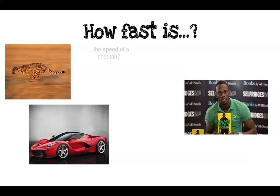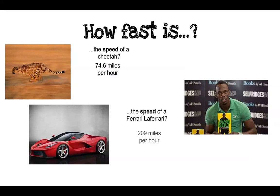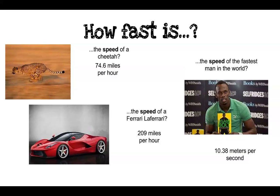So the question is, how fast is the speed of a cheetah? A cheetah's top speed is 74.6 miles per hour. How about the speed of the Ferrari LaFerrari? 209 miles per hour — obviously not street legal, but that is the highest it can go. And what's the speed of the fastest man in the world? 10.38 meters per second. So for every second that he's running, he can travel 10.38 meters.